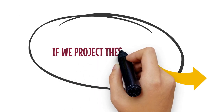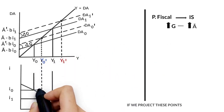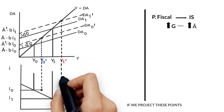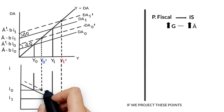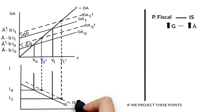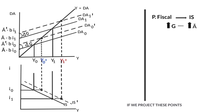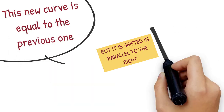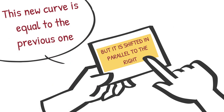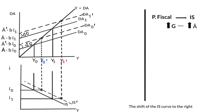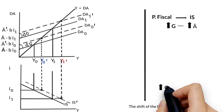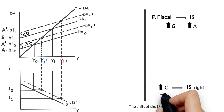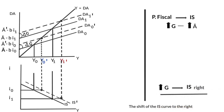Projecting these points onto the interest rate–income graph, we get two new equilibrium points. Joining these two new points, we get the new IS Curve called IS prime. This new curve is equal to the previous one but shifted in parallel to the right. Therefore, an increase in public expenditure results in a rightward parallel shift of the IS Curve.